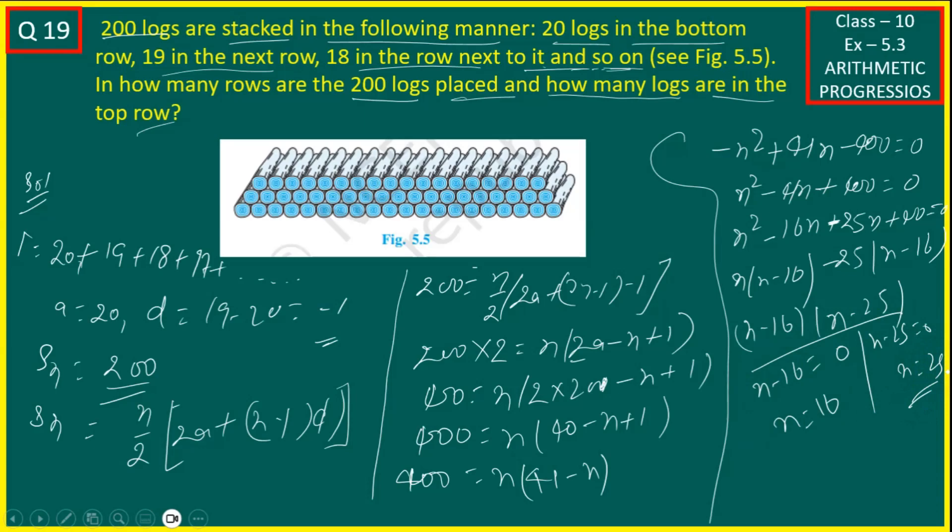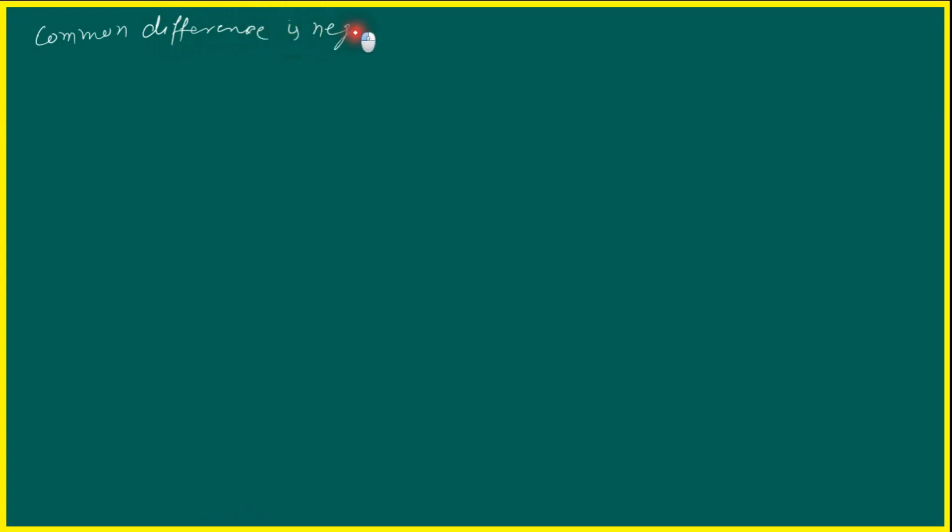N ke 2 values aa gaye: ek 16 aaya aur ek 25 aaya. Inme se ek value wrong hogi aur doosra right hoga. Ab yahan pe D kya hai — common difference kya hai? Common difference negative value hai.